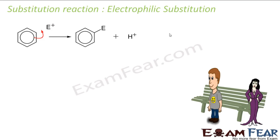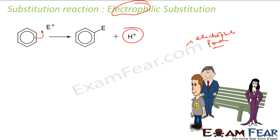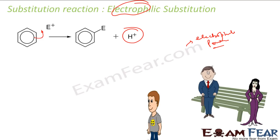Let us study the electrophilic substitution reaction concept. In electrophilic substitution reaction, the attacking reagent is an electrophile. Electrophiles generally carry a positive charge. So this electrophile will kick out the weak group. Since the electrophile is a guy in our analogy, it will try to kick out a guy — not a girl — to maintain the bond. This electrophile kicked out the hydrogen attached to the carbon, and it attaches in place of it.